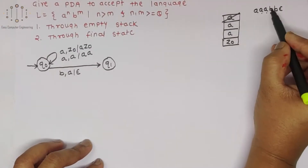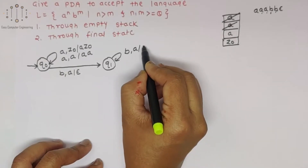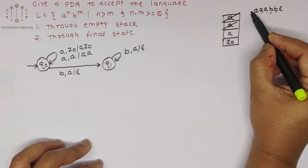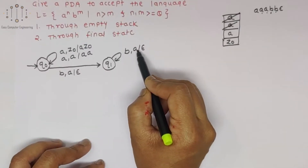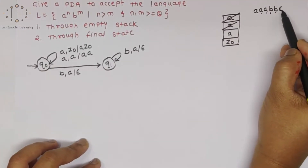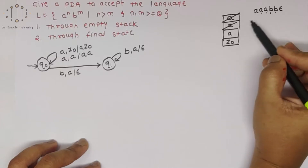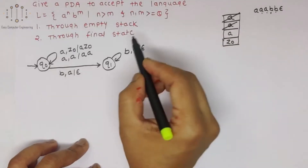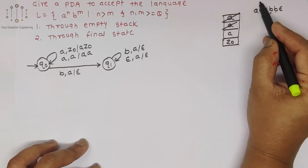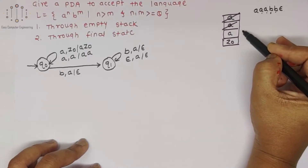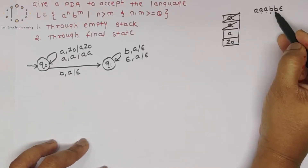For each b, incoming is b and stack has a, so pop it. If there are 5 a's and 4 b's, we will pop 4 times using this transition. After all b's are consumed, remaining input is epsilon, but stack still has a's. So for incoming epsilon with a in stack, we pop it. If there are 5 a's and only 2 b's, there will be 3 a's remaining in the stack, and for each epsilon we pop those a's.